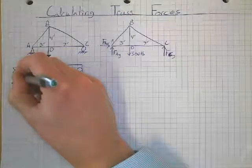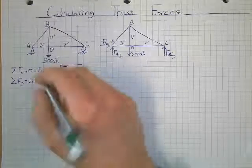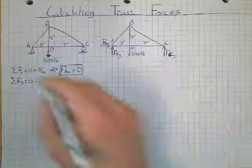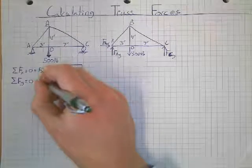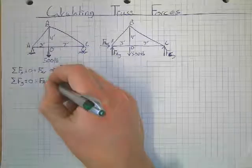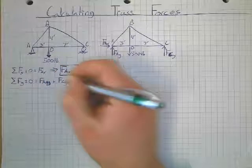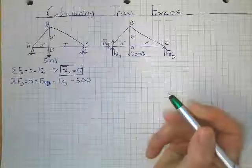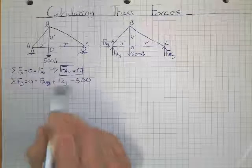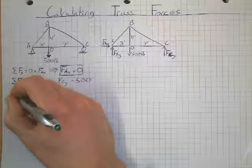Sum of my forces in Y are also equal to 0. My Y forces in this case are FAY, negative 500, and FCY. So I'll just write all my positives first because that's how I like to do it. FAY plus FCY minus 500. As we know from our previous examples, we cannot solve this because we have two unknowns and only one equation. So we need to use moments.